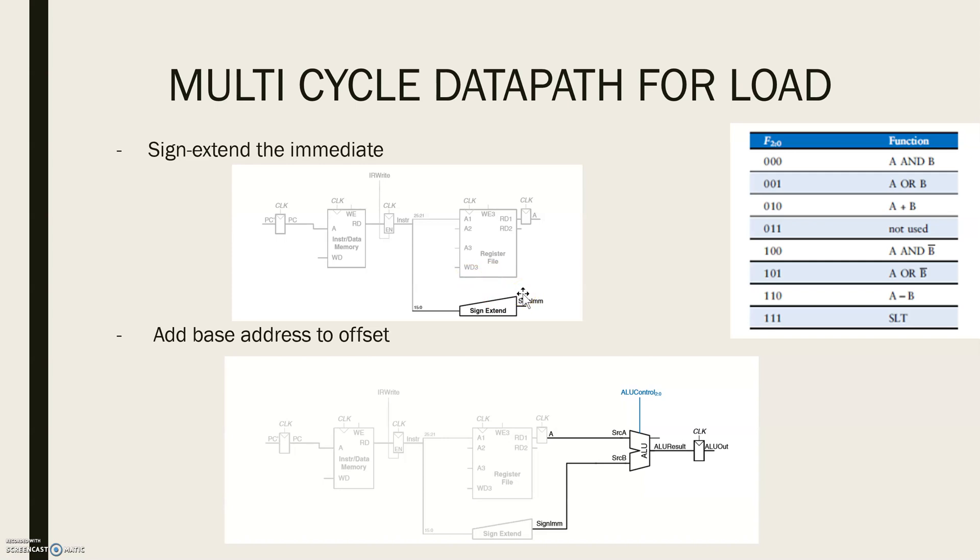The address of the load is calculated as the sum of the base address and the offset. We use an ALU to compute the sum. The ALU control value will be 010 to perform an addition. The ALU result is stored in a non-architectural register called ALUOut.